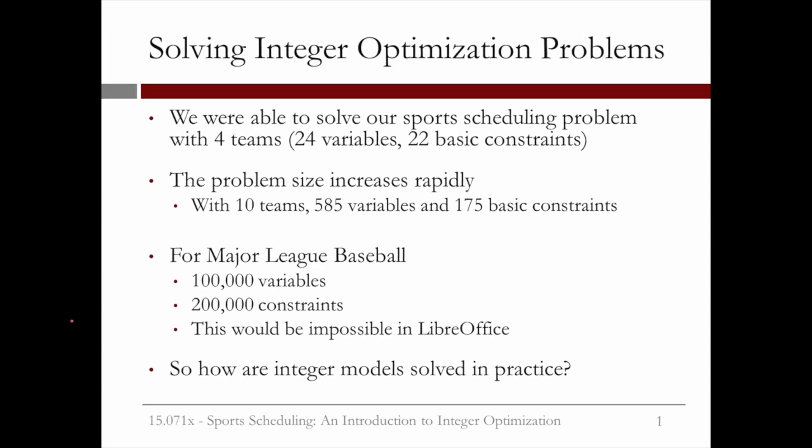We were able to solve our sports scheduling problem with 4 teams, 24 decision variables, and 22 basic constraints pretty quickly. However, the problem size increases rapidly. The same problem with 10 teams would have 585 decision variables and 175 basic constraints. For scheduling Major League Baseball, the problem has 100,000 decision variables and 200,000 constraints.